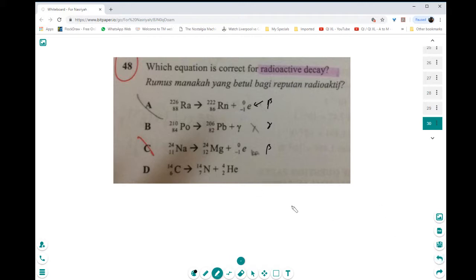The problem here is, if you look at it carefully, if it is beta decay, the neutron would have turned into a proton and an electron, right? So this proton number should have increased, right? But it didn't increase. So this is wrong.